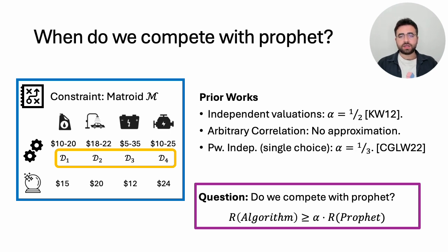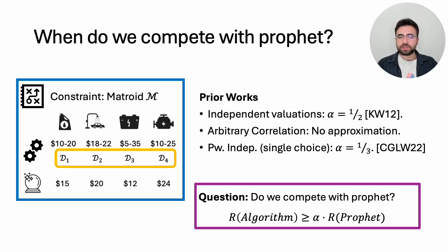In a recent result, Caragianis, Gravin, Lu, and Tzamos investigated a correlation model between these two extremes: pairwise independence. A collection of distributions is called pairwise independent if every pair is independent, but more than two distributions may involve some correlations. In that setting they showed that for the classical problem there exists a one-third competitive prophet inequality when prior distributions are pairwise independent.